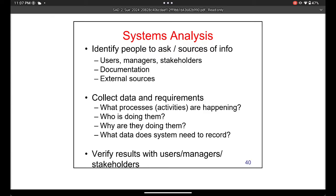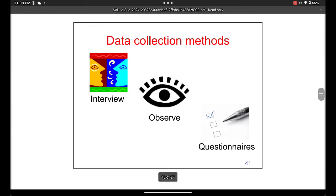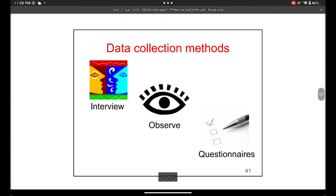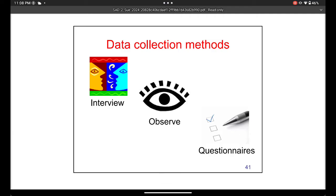In system analysis you communicate with everyone — employees and managers — to collect data and determine what requirements the new system must have. You ask people exactly what they need in the new system so you, as the system analyst, can gather this information and pass it to the developers to code the system. Data collection methods are: interview, observe, and questionnaires. Questionnaires are used when covering a large geographical area. Observation means watching the processes in the business with your own eyes, and interviews involve speaking directly with people.